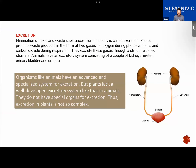We humans have a kidney and a bag-like structure called the urinary bladder which stores the urine for some time. When it is full, we have to get rid of the urine. Our excretory system is very advanced. But not all organisms have such advanced systems to excrete waste products.